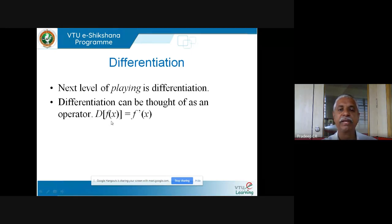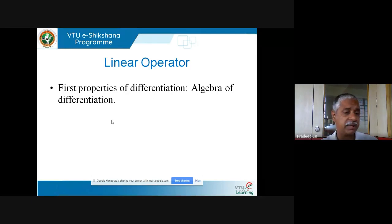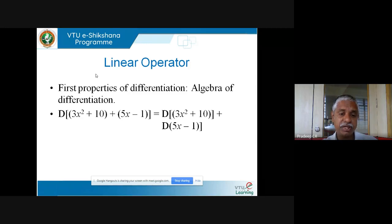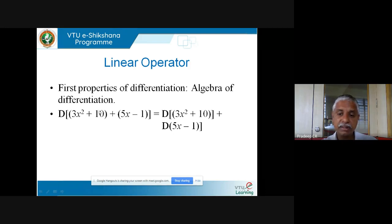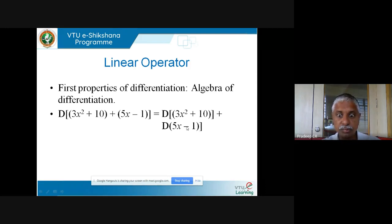The notation I'll use is: capital D of f(x) equals f′(x). This is a way of going from one function to another. The key property — the algebra of differentiation — is: D(3x² + 10) + D(5x − 1) is the same as taking the derivative of each function separately and then adding. Note that the addition before differentiation and the addition after differentiation are different operations.